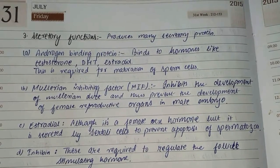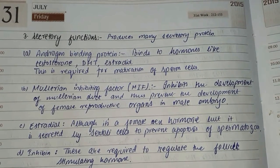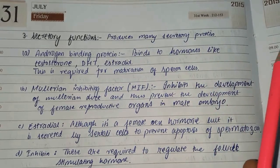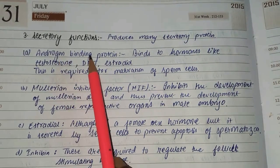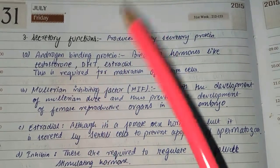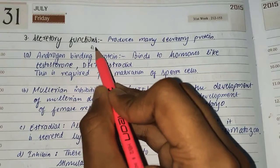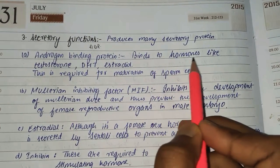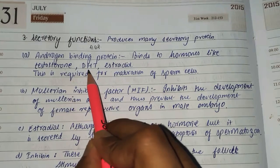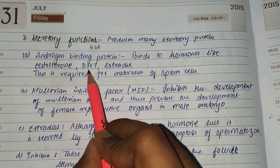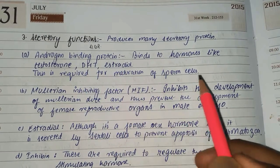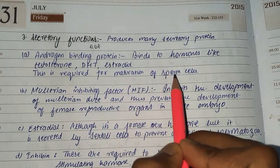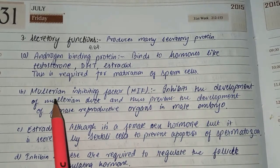The third function is secretory. Sertoli cells produce androgen binding protein (ABP), which binds to hormones like testosterone, DHT (dihydroxytestosterone), and estradiol. This is required for the maturation of sperm cells.